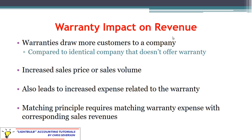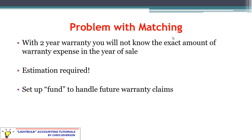The big difference with warranty is that we actually have a liability we are setting up — we do owe something to the customer, which is a different situation than bad debt. In our two-year warranty example, we're not going to know the exact amount until that two years has expired, which is going to be in a separate accounting period. So in order to do some sort of matching, we have to estimate what warranties we think are going to come through based on past history, industry standards, or whatever we use as a basis. We're essentially setting up a fund to handle future warranty claims as they come through.